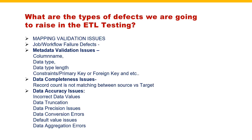Next defect is data completion issues. For example, as mentioned earlier, the source has 10 records and the target has to load 10 records, but it is loaded only 5 records - which means the record count is not matching between source versus target. The data is partially loaded. You can write it up as data completion issues: record count is not matching between source versus target. Source is having 10 records but target is having 5 records.